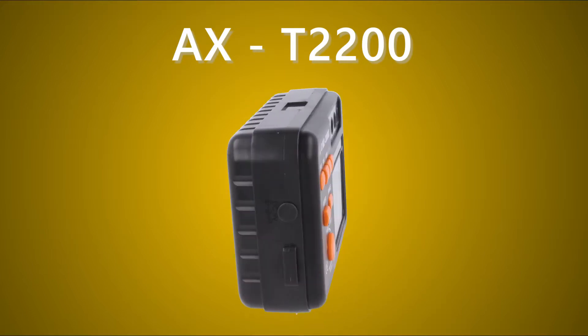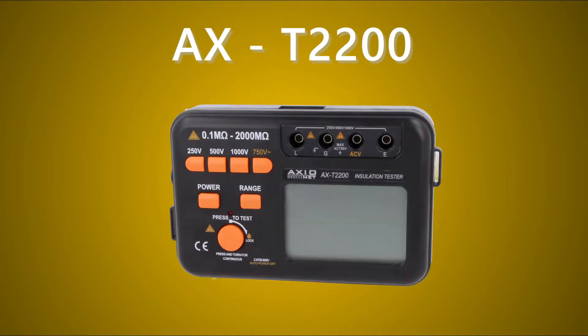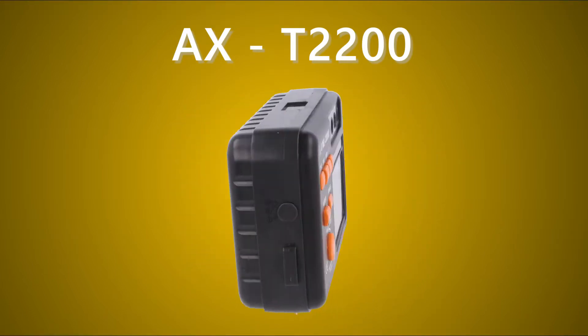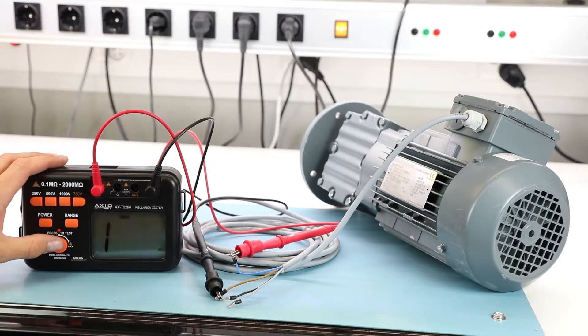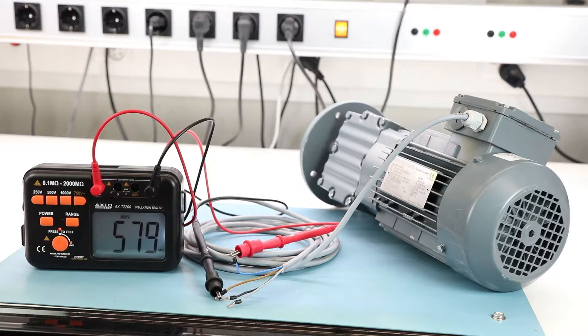The Axiomet AXT 2200 insulation resistance ohmmeter is an easy-to-use device for making measurements in accordance with applicable norms, for specified measurement voltage with required precision.